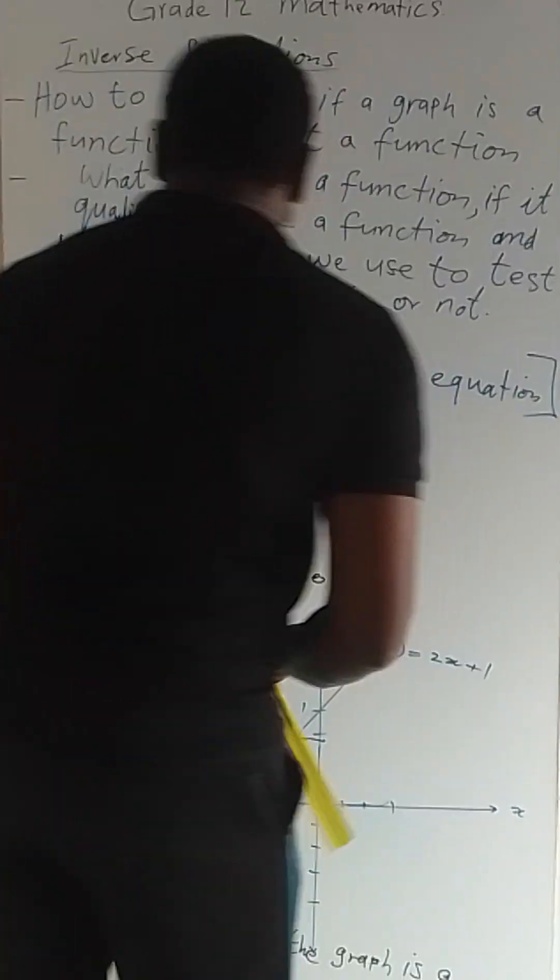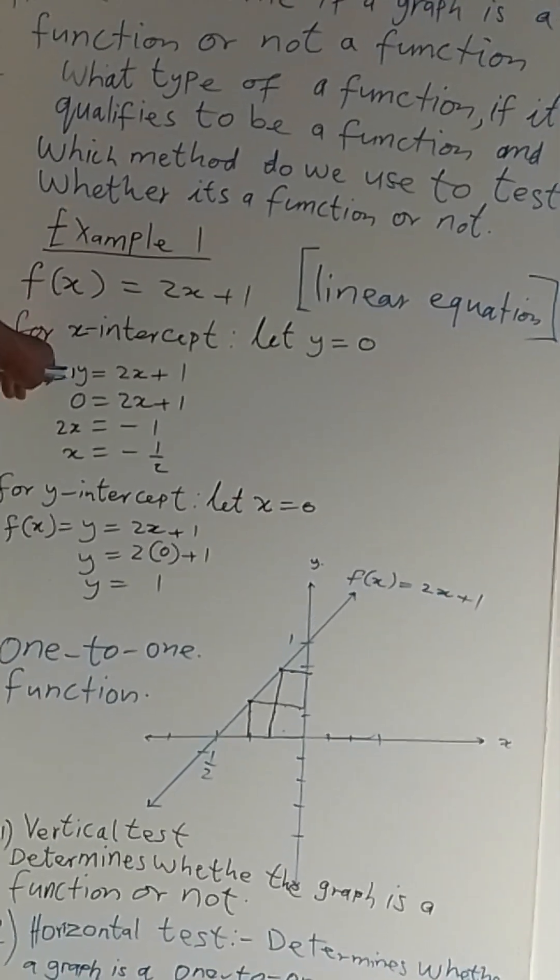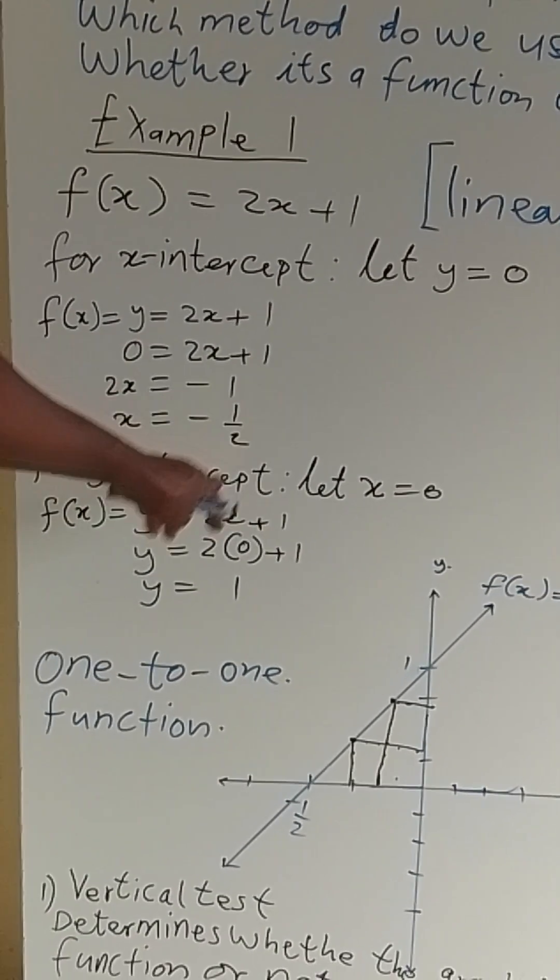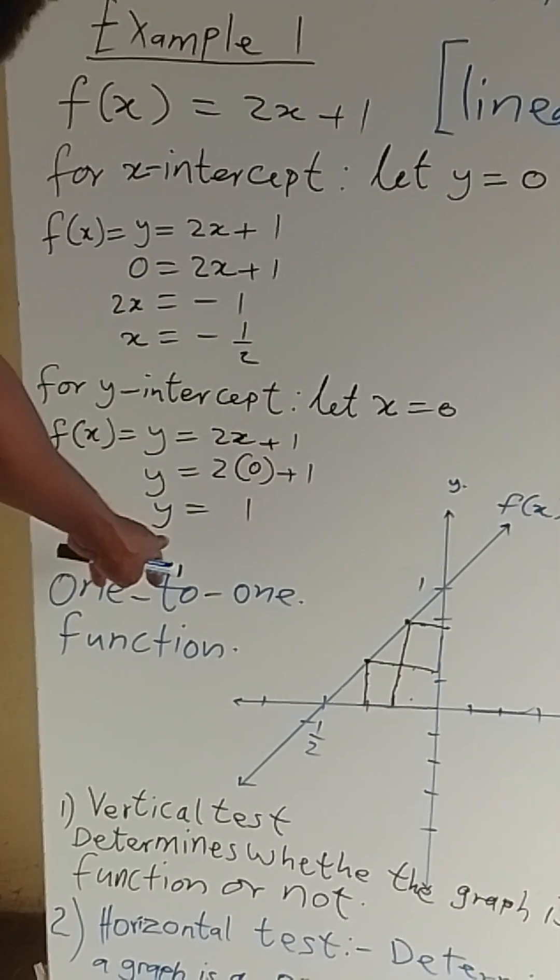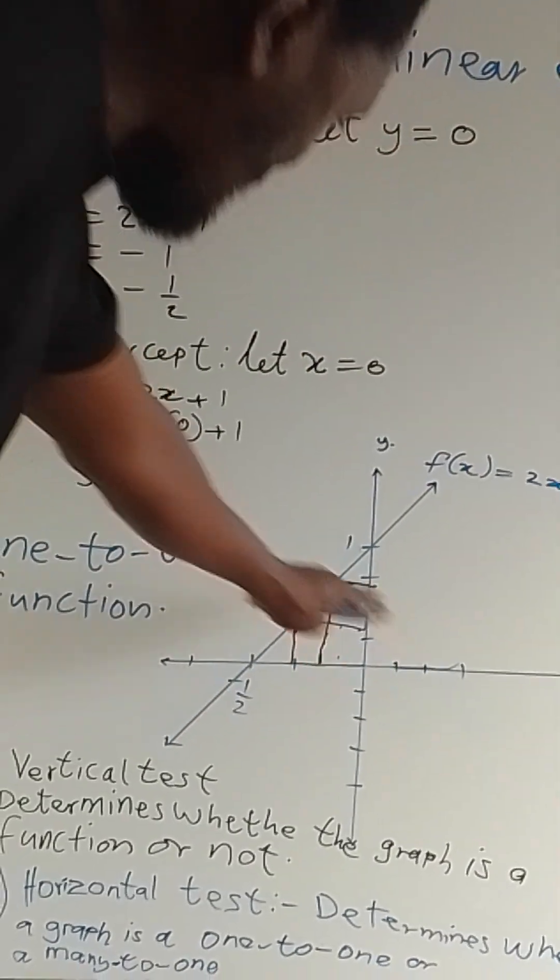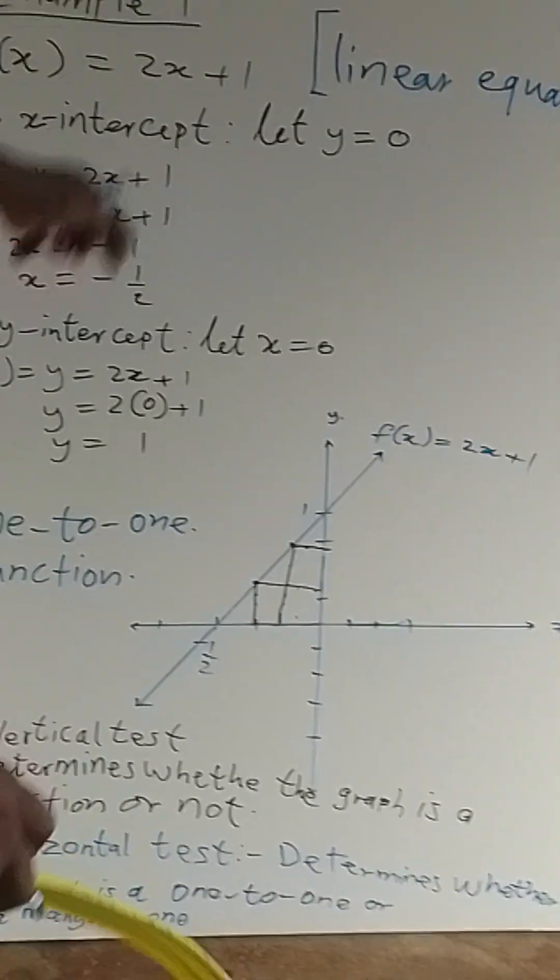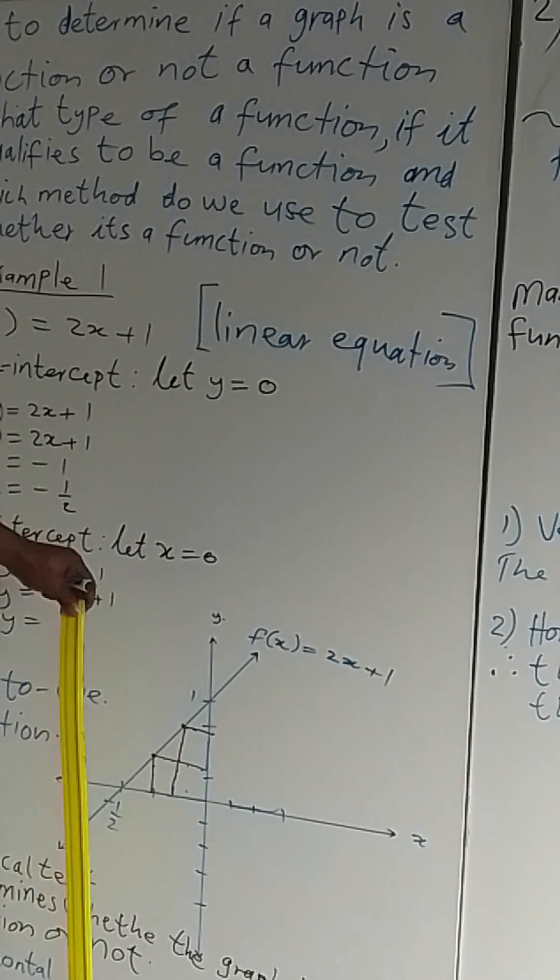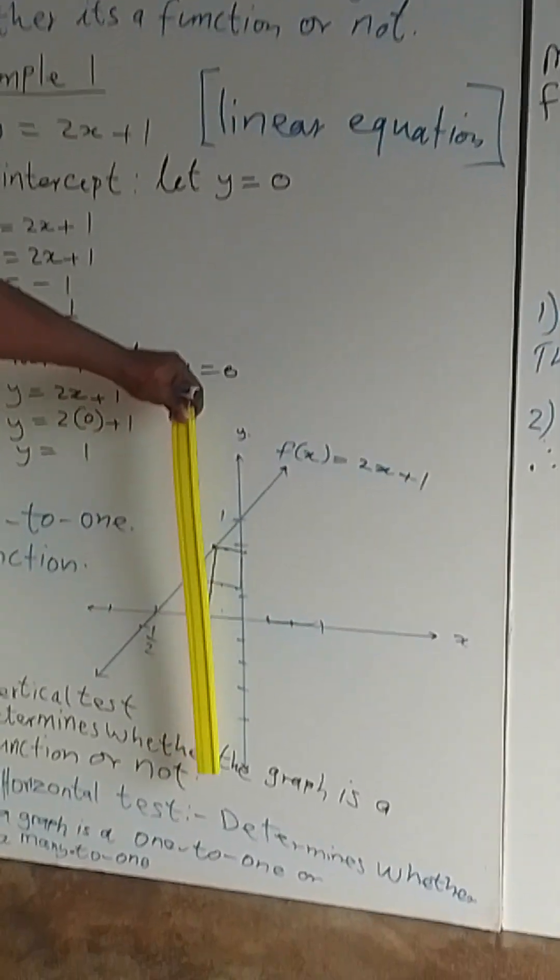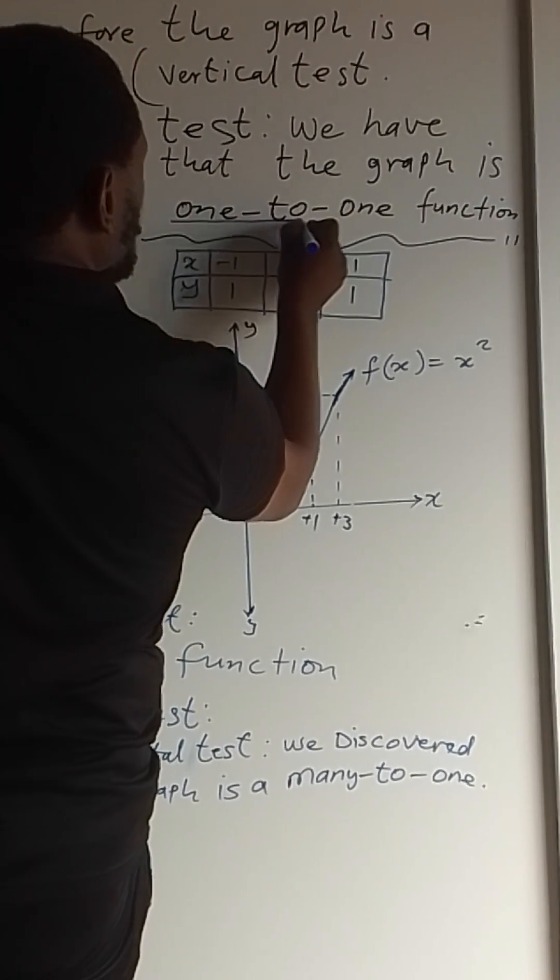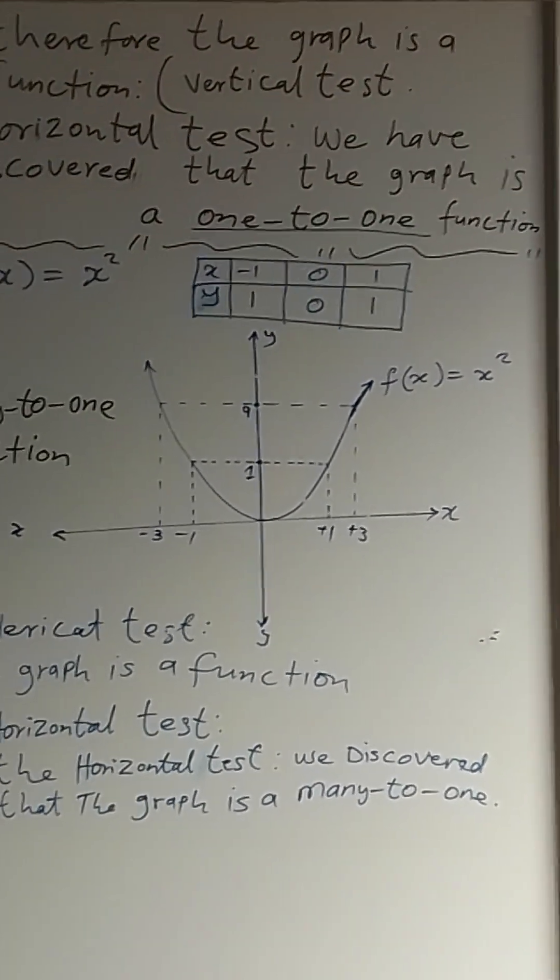We have a linear equation which says that f(x) equals 2x plus 1. By finding the intercept of the x-axis, we let y equal zero and find that x is negative one-half. Then we find the y-intercept by letting x equal zero. When we draw our graph and perform a vertical test, we find that the graph is a function because it only touches one value of x and one value of y. This is called a one-to-one function.